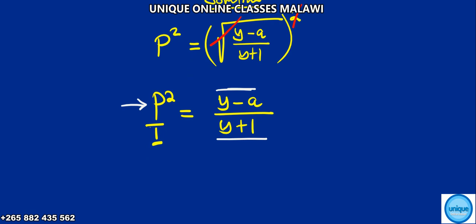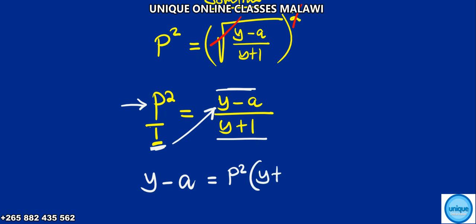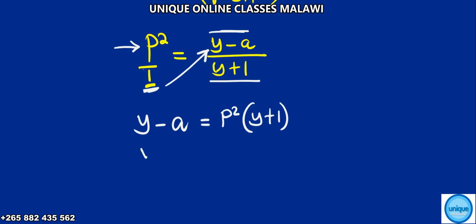What we have here: I'm sending this to the numerator and that is P. I'm sending the denominator across, so y minus a is good. The product of P squared and y plus 1 gives us P squared times y and 1 times P squared, that's P squared. So we have P squared y plus P squared equals y minus a.